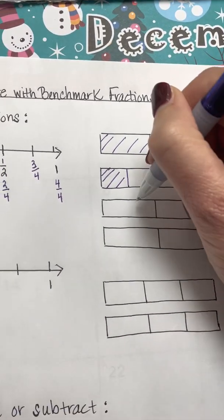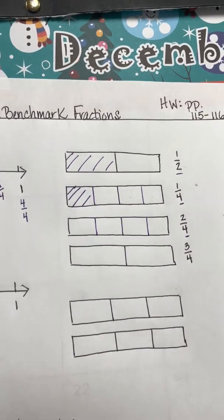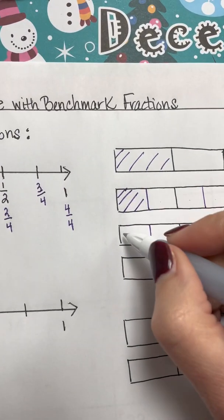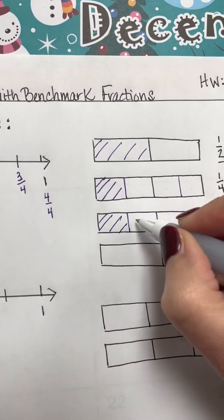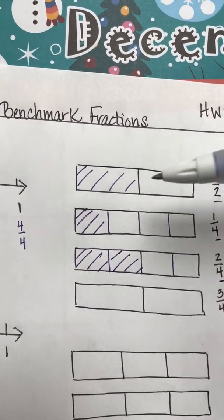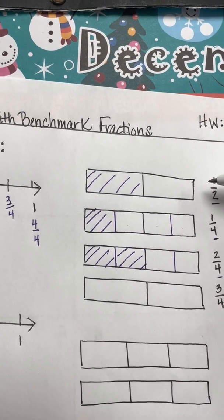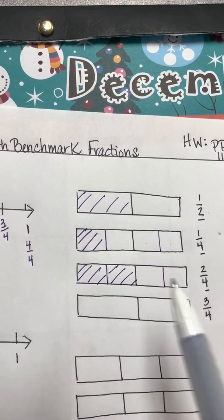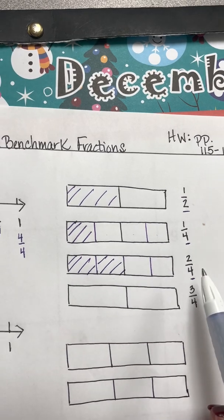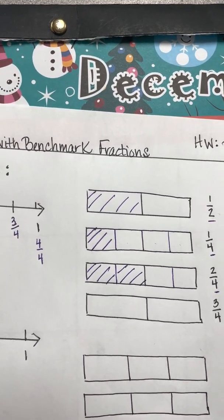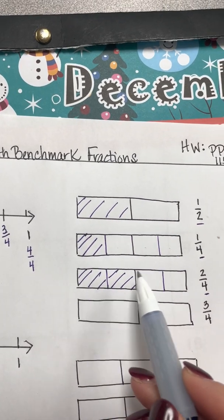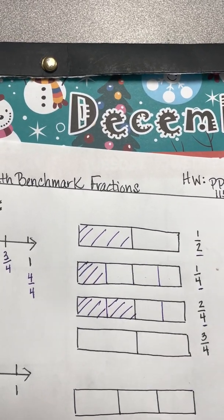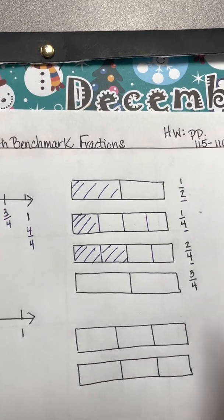For two-fourths, our denominator is four, so we split our halves in half again and shade two out of four. As you can tell, your benchmark one-half model is the same as your benchmark two-fourths — two-fourths is equivalent to one-half. We don't usually use two-fourths as a benchmark fraction because we know it is the same thing as one-half.